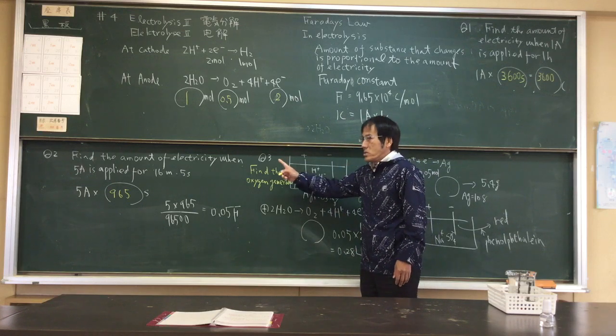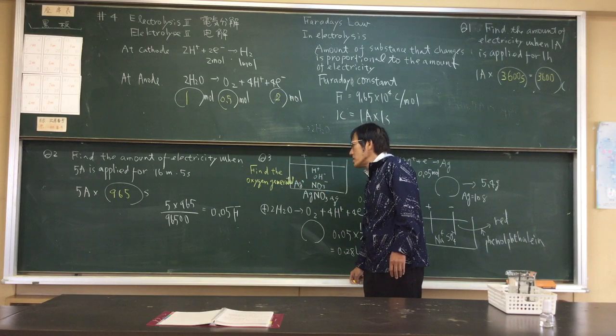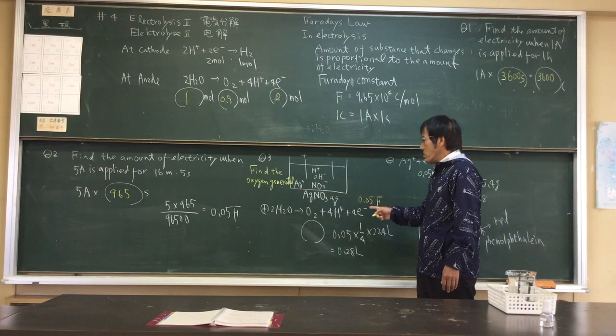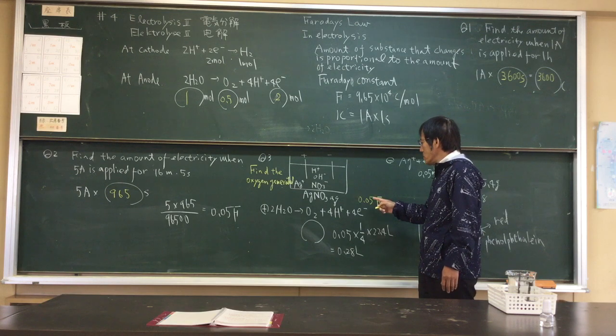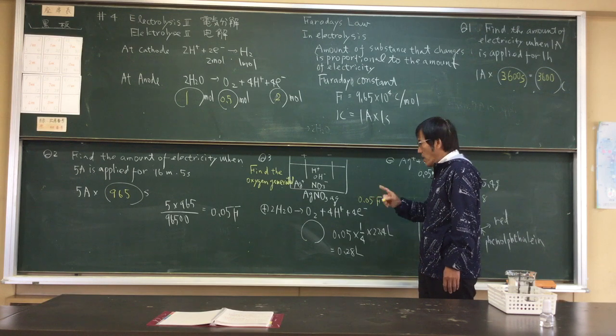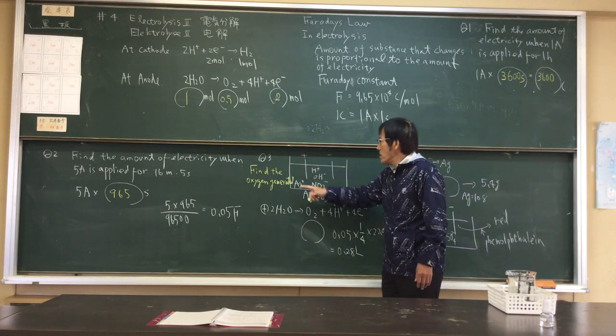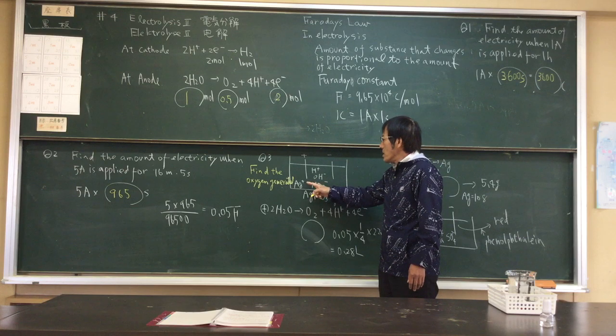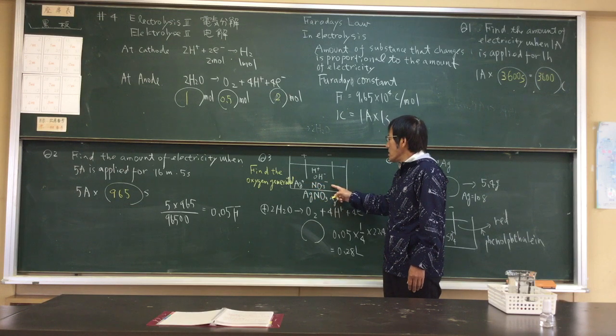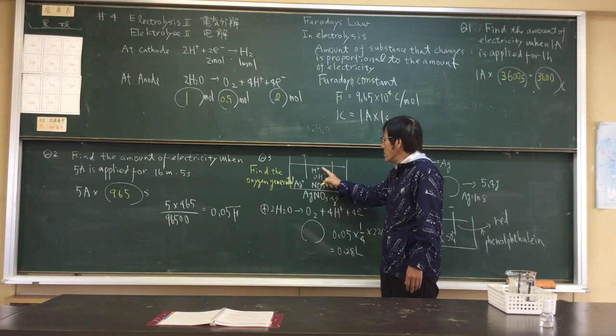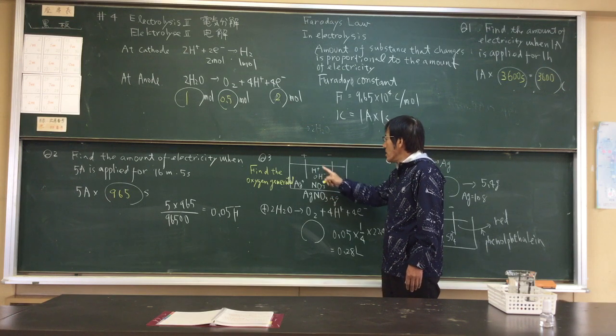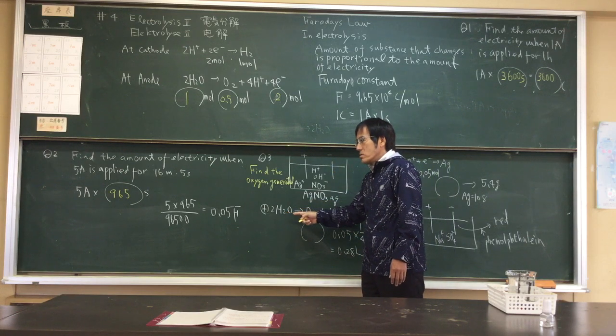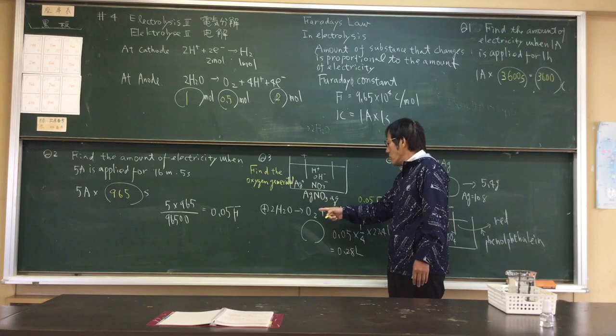Question three. Find the oxygen generating if the electron flow of 0.05 molar. Electride is silver nitrate. Is silver ion. Water. Proton andibus. Water is oxidized to produce oxygen.